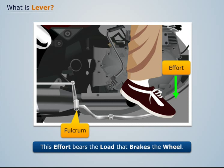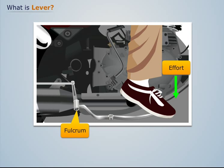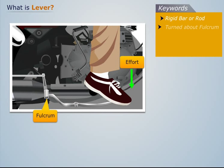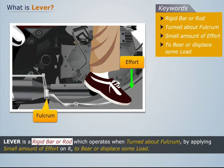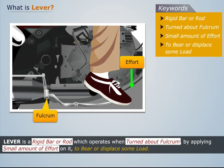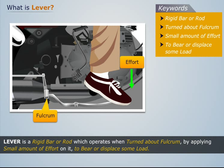This effort bears the load that breaks the wheel. Thus, lever is a rigid bar or rod which operates when turned about fulcrum by applying small amount of effort on it to bear or displace the same load.